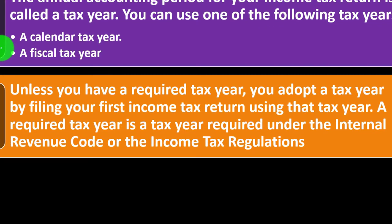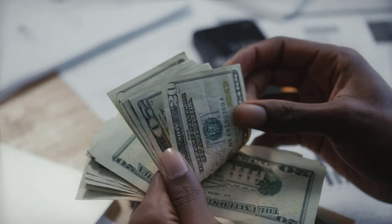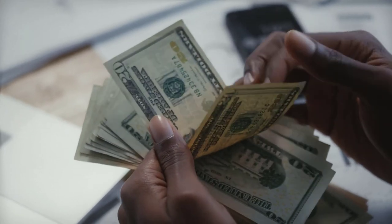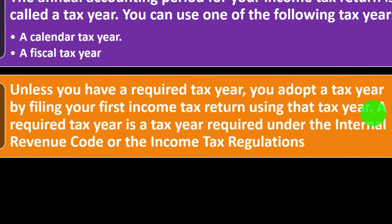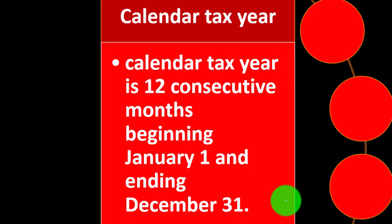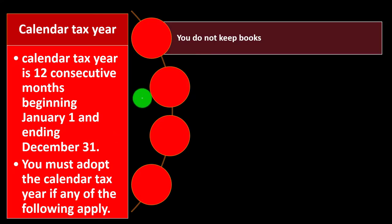Unless you have a required tax year, you adopt a tax year by filing your first income tax return using that tax year, which locks you in due to the consistency requirement. A required tax year is one required under the Internal Revenue Code or income tax regulations. A calendar tax year is 12 consecutive months beginning January 1st and ending December 31st — most likely the tax year that most Schedule C businesses will use.